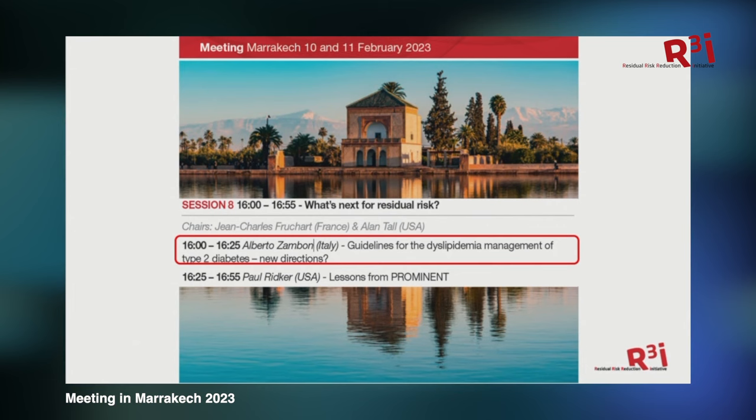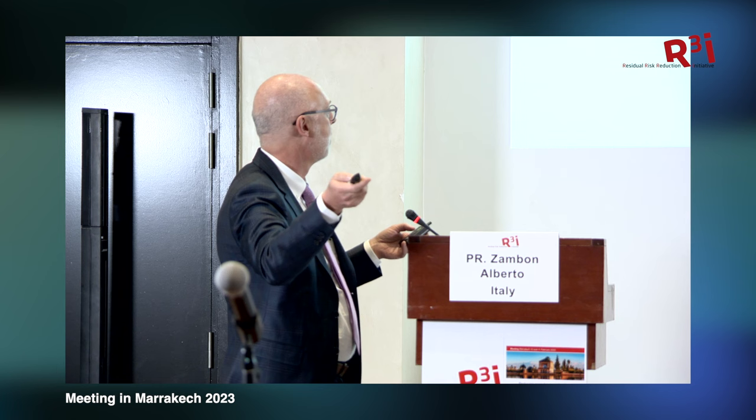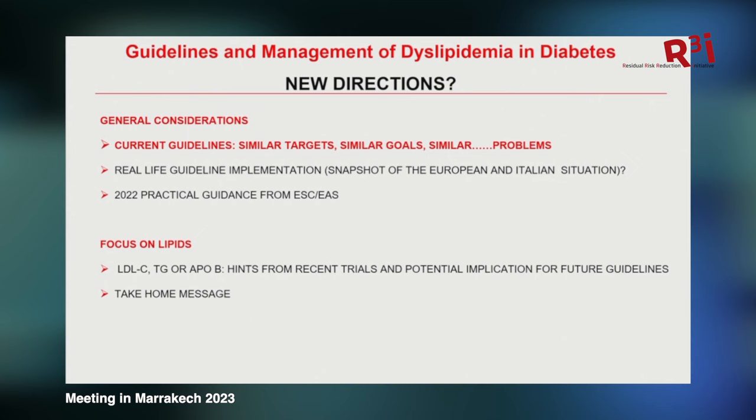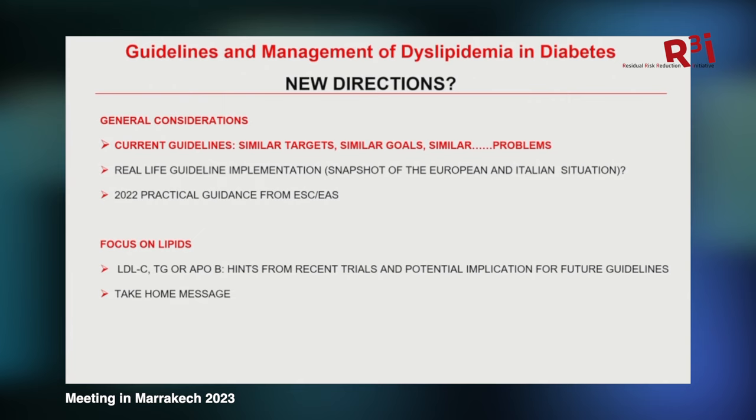The task I've been given is talking about guidelines and new directions for dyslipidemia. The few points I'd like to touch on: let's start with some general assumptions and considerations, and then we'll focus more on lipids — what we might have learned from trials that have been presented and recent trials available on lipids — as simple messages to convey to probably future guidelines. Current guidelines have similar targets, similar goals, similar problems.